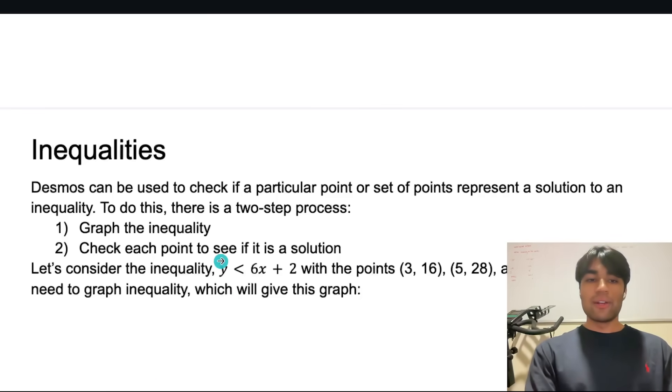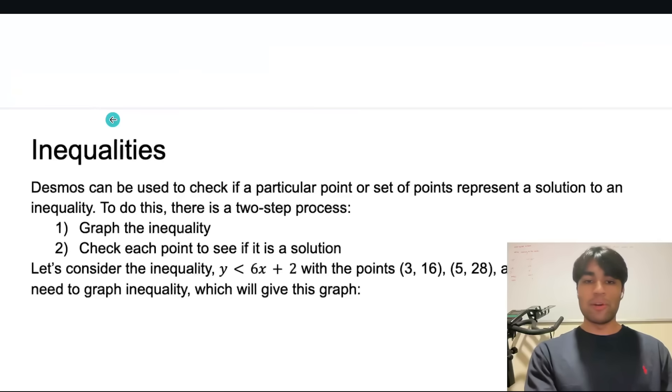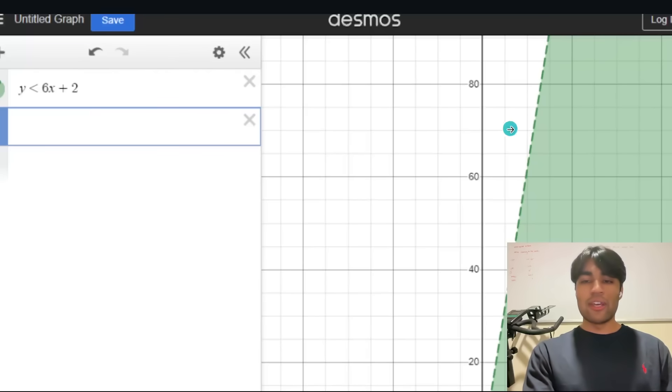Let's get into something a little bit more complicated though. Inequalities. So as you can see over here let's say we get the inequality y is less than 6x plus 2. And so I've looked through the SAT questions and usually what they do with inequalities is they give you points and they ask you are these points solutions for this inequality. And so usually you'd have to like plug them in and see if it satisfies. But now with Desmos you just put in your inequality.